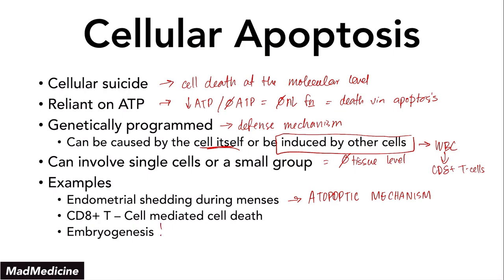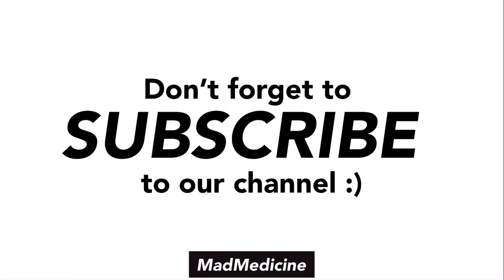Embryogenesis is very high yield — a lot of people forget this and don't realize that apoptosis is a key mechanism of the developing fetus and the developmental cycle. That covers pretty much everything you need to know about cellular death at the basics level. We're going to continue this lecture series by discussing cellular necrosis and cellular apoptosis in detail. If you liked this video, don't forget to subscribe — it allows us to keep this content free for you. Thank you so much for watching, and we'll see you back in the next lecture.